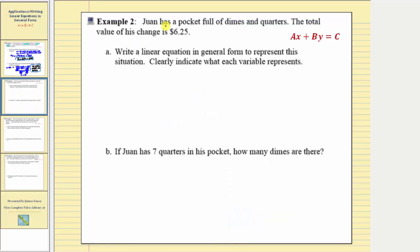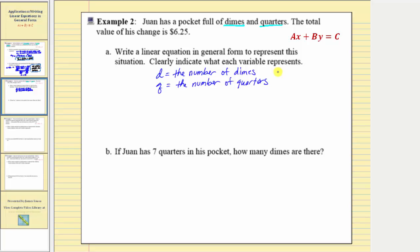Let's look at a second example. One has a pocket full of dimes and quarters. The total value of his change is six dollars twenty-five cents. We begin by defining the variables — we don't know how many dimes or quarters he has, so these are the two unknowns. Let d equal the number of dimes and q equal the number of quarters. Each dime is worth ten cents and each quarter is worth twenty-five cents, so the value of the dimes is ten cents times d, plus the value of the quarters is twenty-five cents times q, and the total value must be six dollars twenty-five cents.